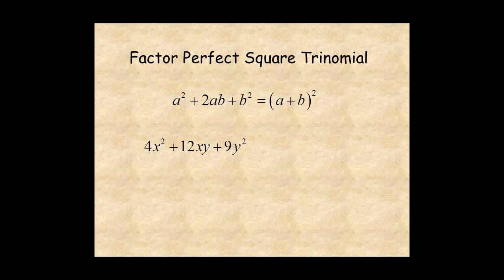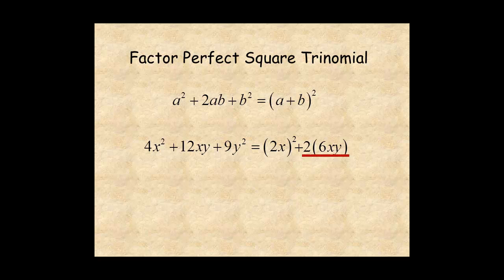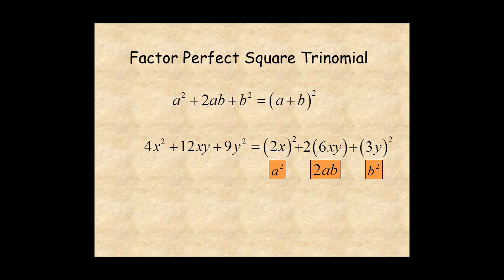Here's an example with two variables. The first and last terms are perfect squares, so rewrite the first term as a square, factor 2 from the middle term, and rewrite the third term as a square. Now you can see it matches the pattern — here's a squared, here's b squared, and here's 2ab. So a plus b has to be 2x plus 3y, and the polynomial factors as 2x plus 3y squared.